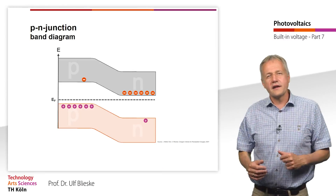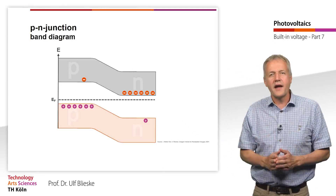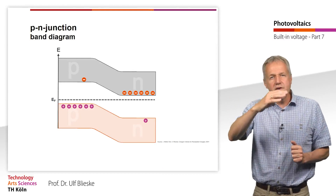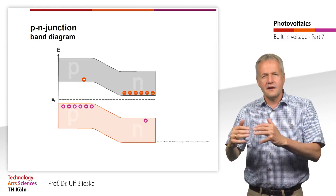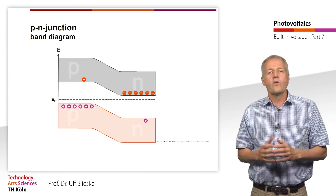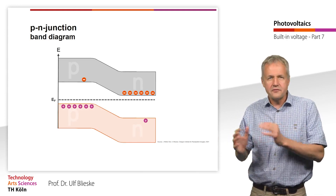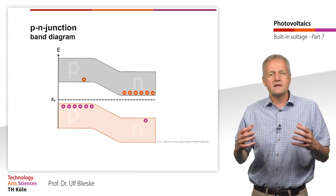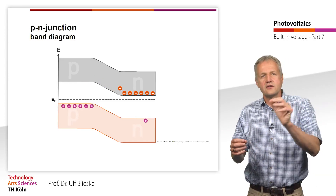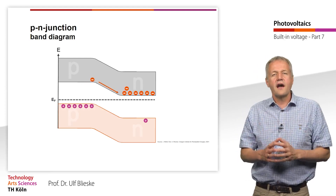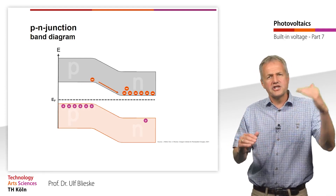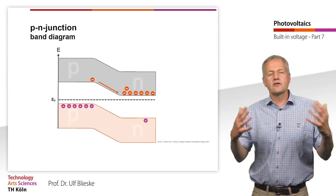Due to the band bending of the conduction and the valence band, the electrons in the conduction band of the p region can now occupy an energetically more favorable place when they move into the n region. Thus, in the conduction band, electrons drift from the p to the n region.